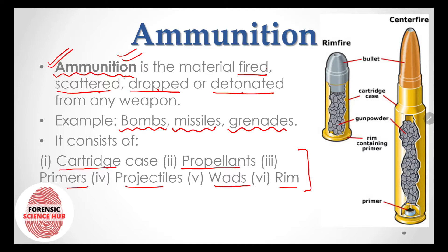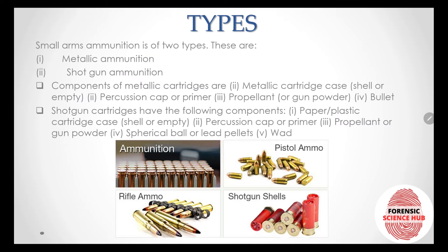These pictures show us ammunition, and as you can see there are different parts. The bullet itself is just one part of ammunition. Other than the bullet, there is the cartridge case — the outer case — then there's gunpowder, primer, and rim. All these things are contained in the ammunition.